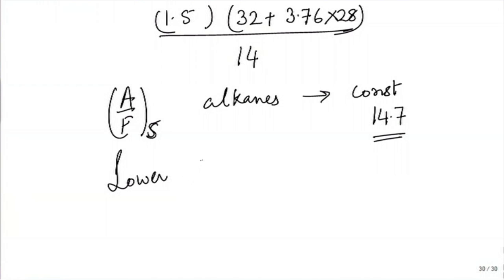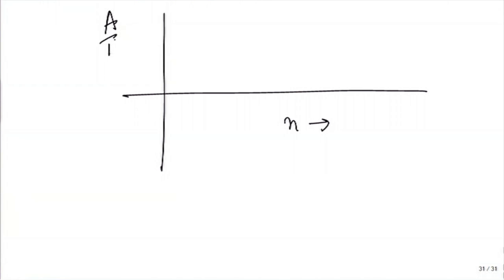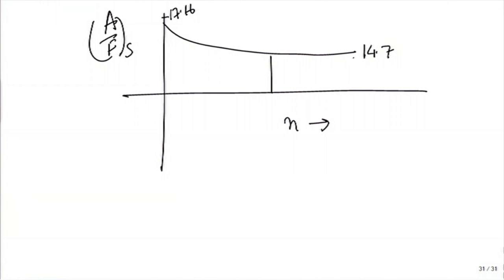Only for the lower alkanes does it differ: for CH4 the ratio is around 17.16, since hydrogen is 4 times the carbon. Plotting AFR versus N, it starts at 17.16 for methane and tends to 14.7 for higher alkanes. For petrol and diesel it is slightly greater than 14.7, perhaps around 15 — that is the stoichiometric air-fuel ratio.